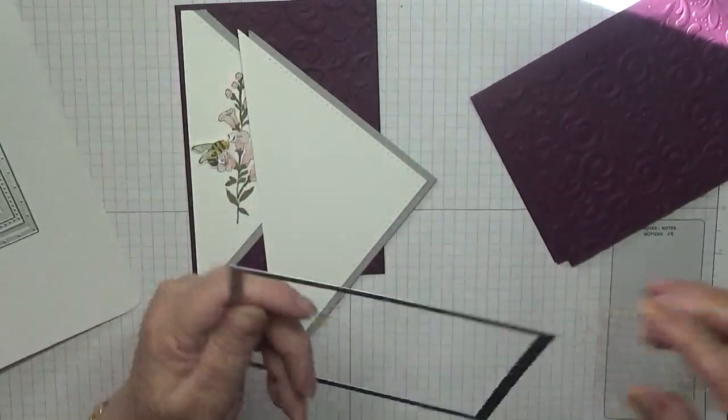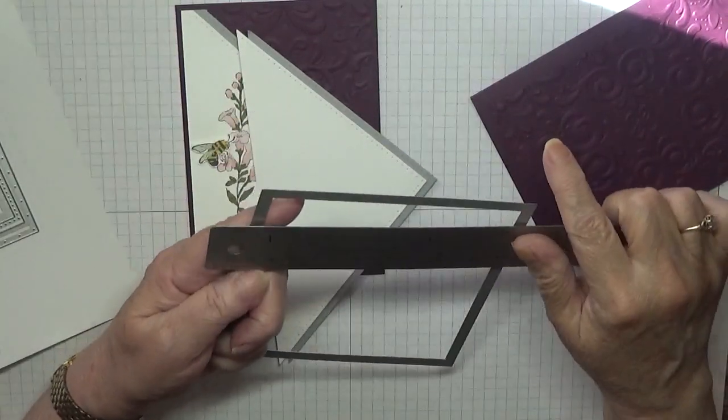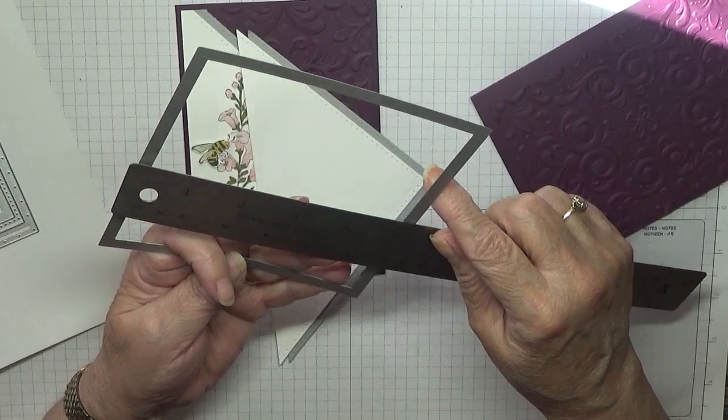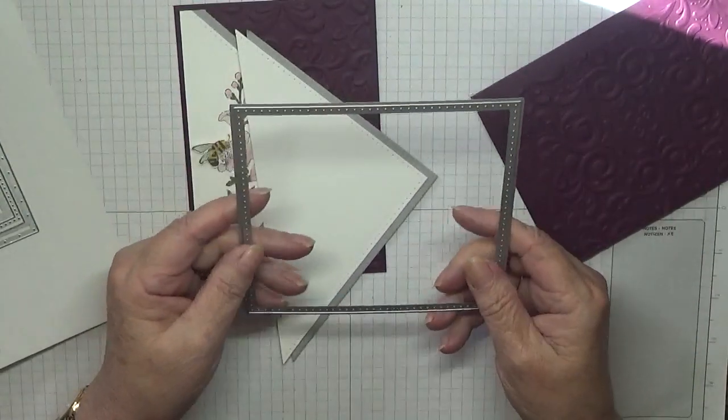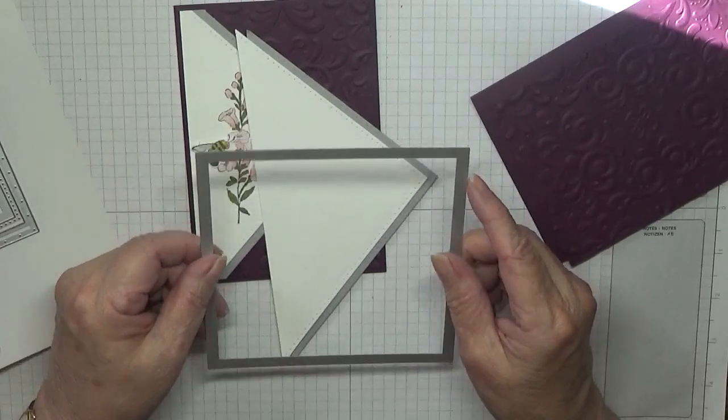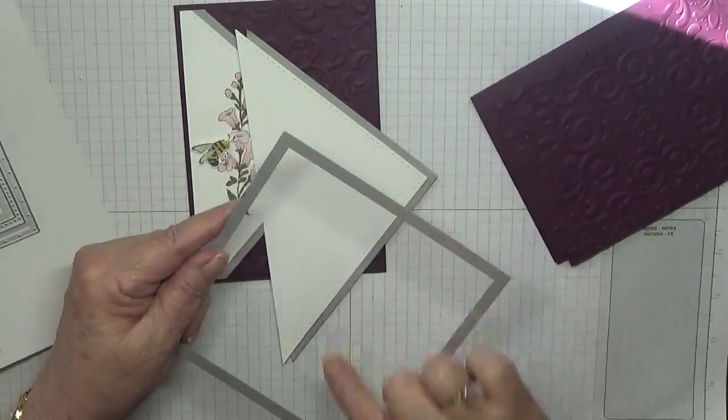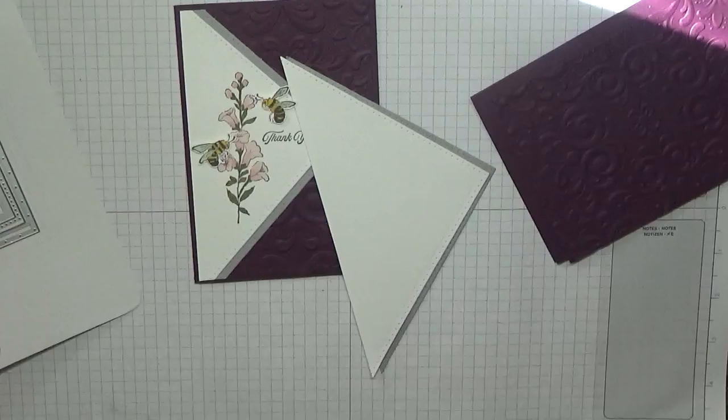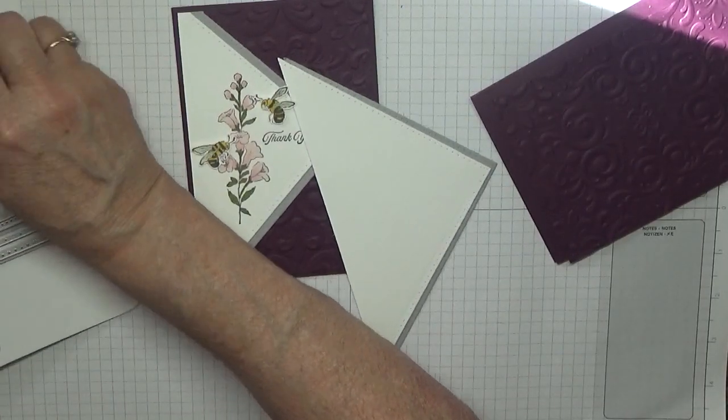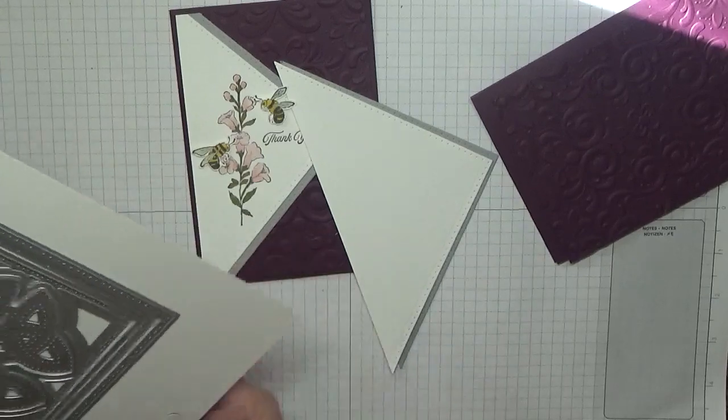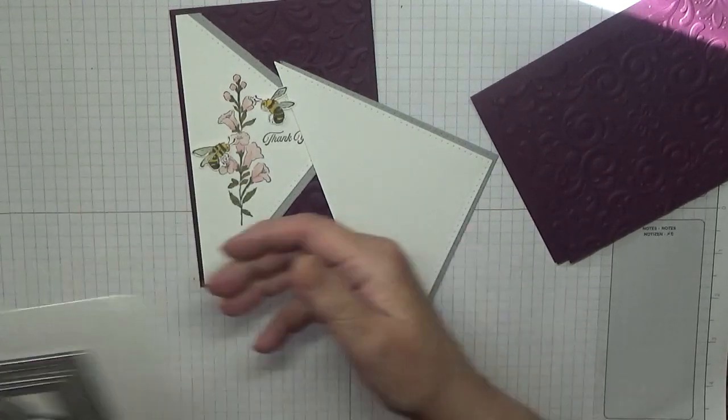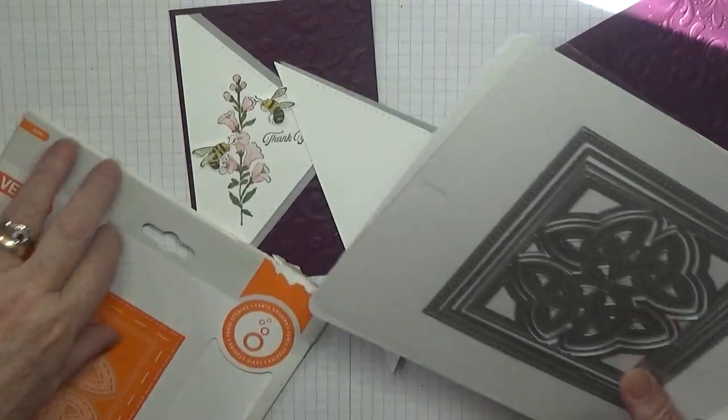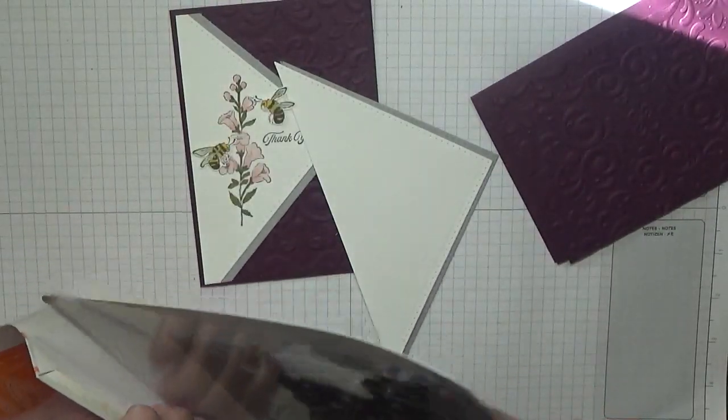This big one here measures 5 and a quarter by 5 and a quarter. I cut out one in Smoky Slate and one in Basic White, and then cut them that way up the middle like that. This was a gift from my sister last year, I think.